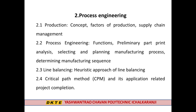The second chapter is Process Engineering, having 12 marks. It contains sub-topics such as Production Concepts, Factors of Production, Supply Chain Management, Process Engineering and their Functions, Preliminary Part Print Analysis, Selecting and Planning of Manufacturing Process, Determining Manufacturing Sequences, Line Balancing, and Critical Path Method and its Application related to Project Completion.